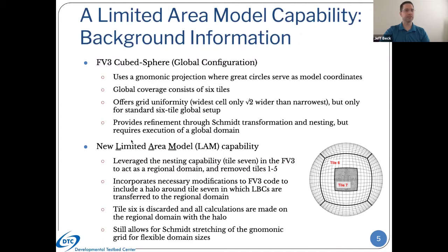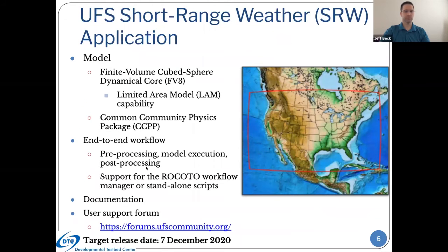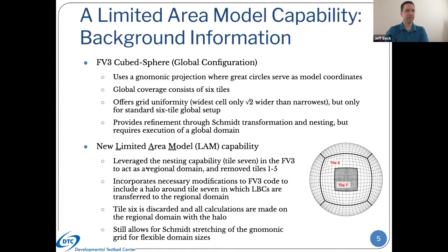When the code was delivered from GFDL to EMC a few years ago, a number of people, including Tom Black, worked on a capability to run it in a regional fashion. They leveraged the nesting capability that exists on what's called tile seven to act as the regional domain, and removed tiles one through five since we don't need those anymore. This incorporates necessary code to use what's called a halo — a number of rows around tile seven that are used for boundary conditions, transferred into the regional domain as lateral boundary conditions. Tile six is just thrown out; we only need the halo values. That leaves us with tile seven, which essentially becomes the regional grid.